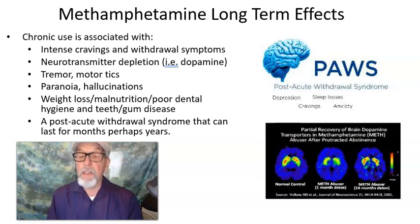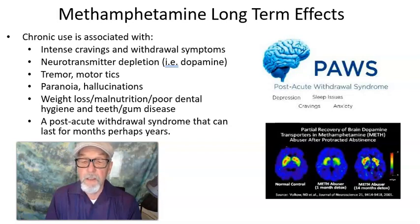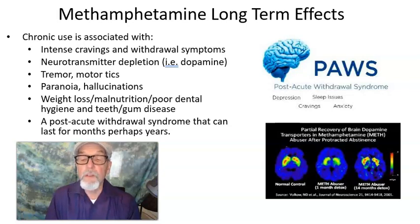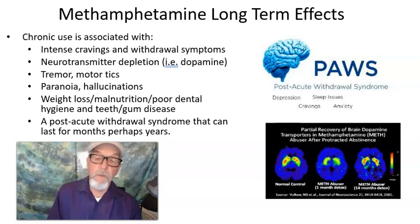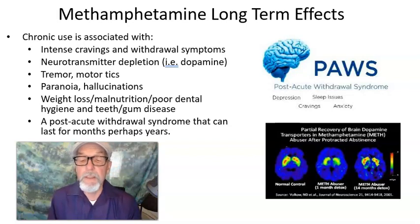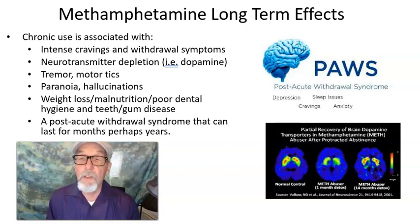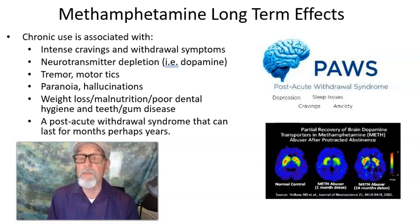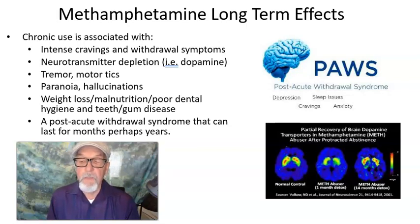Long-term effects: chronic use of meth is associated with intense cravings and a withdrawal syndrome sometimes in excess of a year, neurotransmitter depletion specific to dopamine, tremor and motor tics, paranoia and hallucinosis, weight loss, malnutrition, poor dental hygiene, and teeth and gum disease. There's also a post-acute withdrawal syndrome — previously called protracted abstinence syndrome — that can last for months, perhaps years, with symptoms typically of depression, sleep issues, cravings, and anxiety.